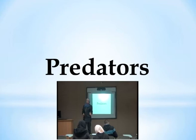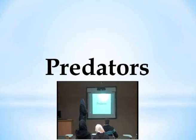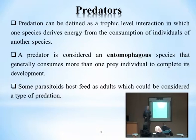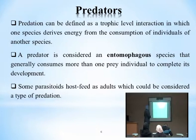Now we move to the second type of natural enemies — the predators. Predators consume food by eating — not by parasitization. They chew and eat insects. Predation can be defined as a trophic level interaction in which one species derives energy from the consumption of individuals of another species.